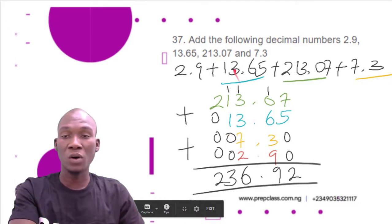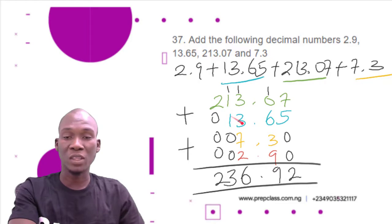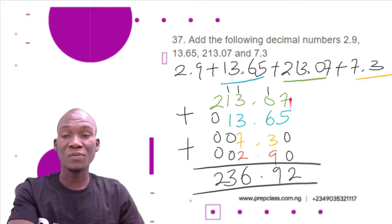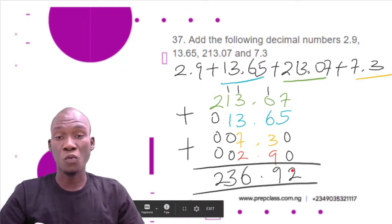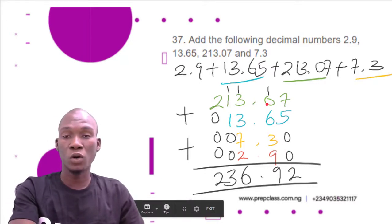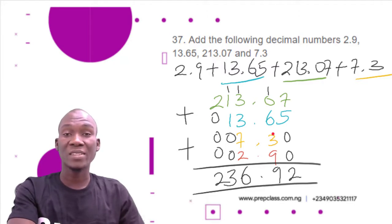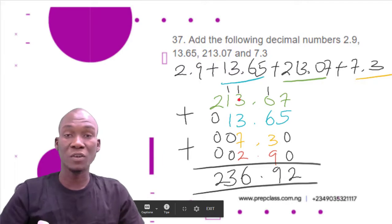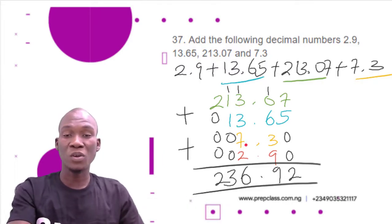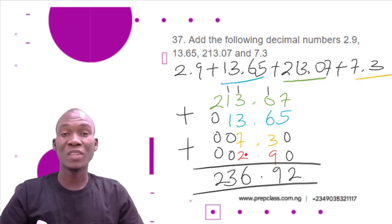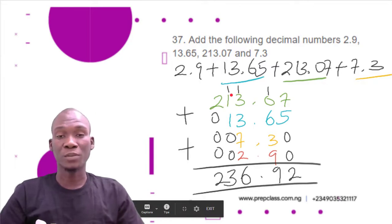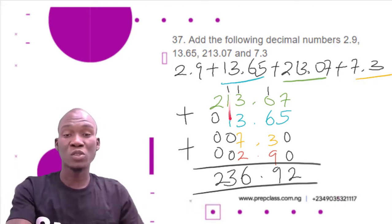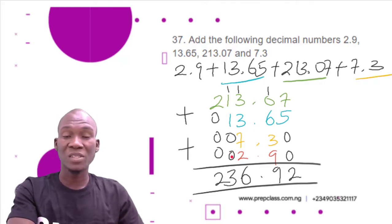We write: 213.07 plus 13.65 plus 7.3 plus 2.9, balancing digits with zeros so all columns match. Adding from the rightmost column: 7+5=12, write 2 carry 1; 1+0+1=1 plus 6+3+9=19, write 9 carry 1; 1+3+3+7+2=16, write 6 carry 1; 1+1+3+0=5... continuing through the columns to get 3 in the next place.